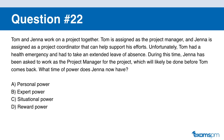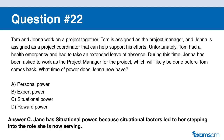Question number twenty-two. Tom and Jenna work together on a project. Tom is the project manager and Jenna is the project coordinator. Tom had a health emergency and took an extended leave of absence. During this time, Jenna has been asked to work as project manager for the project, which will likely be completed before Tom returns. Which type of power does Jenna now have? A: personal power. B: expert power. C: situational power. D: reward power. If you said C, you are correct. Jenna has situational power because the situational factors led her to step into the role of project manager.